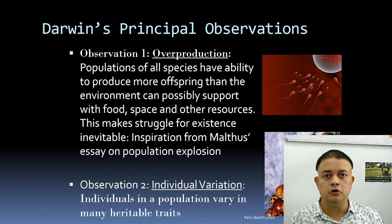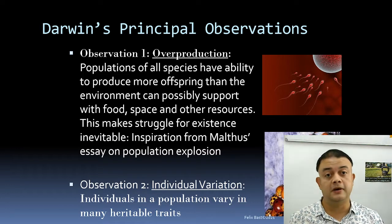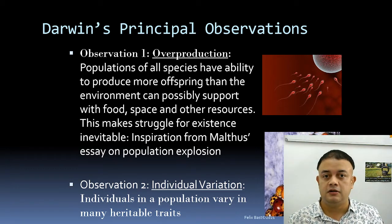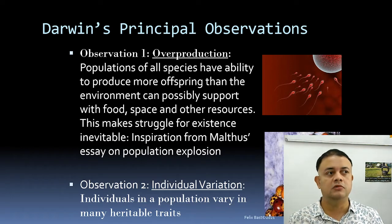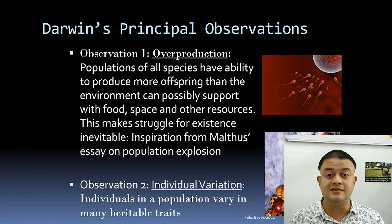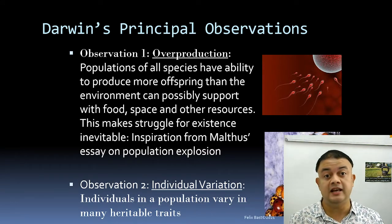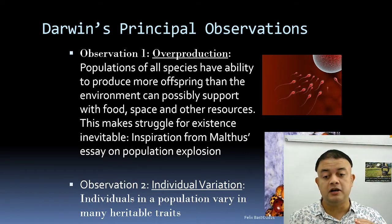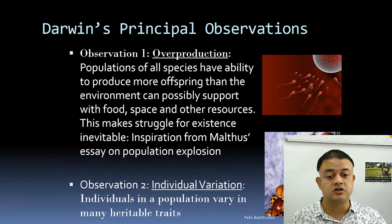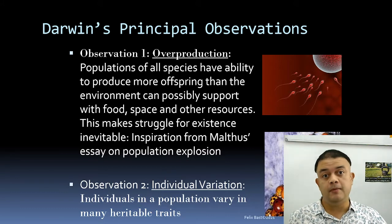Even among monozygotic twins, there are various variations though the genome is identical. Individuals in a population can vary in many heritable traits — this is Darwin's observation of individual variation. These two observations — overproduction and individual variation — are the landmark observations of Darwin.